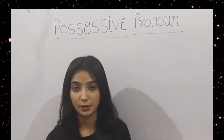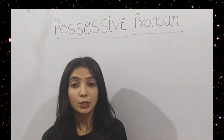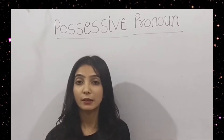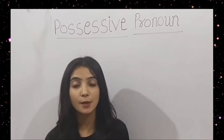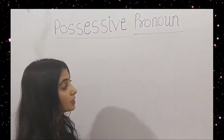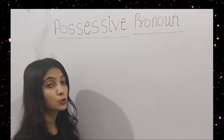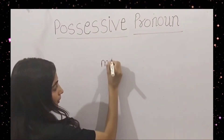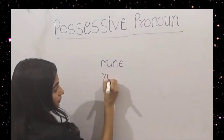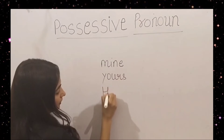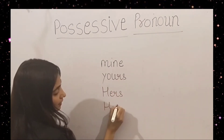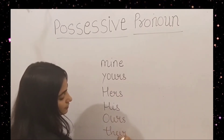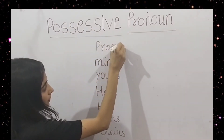First of all, what is possessive pronoun? Possessive pronouns are the words used to show the possession, or you can say the ownership. Aisey shabd, joo adhikar jamane wala kaam kerte hain, onko hum kehte hain possessive pronoun. For example, I'm going to tell you which are the words used to show the possession or ownership. For example: mine, yours, hers, his, ours, theirs. These are possessive pronouns.